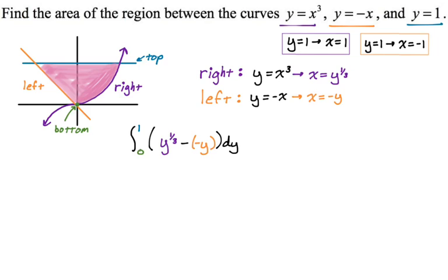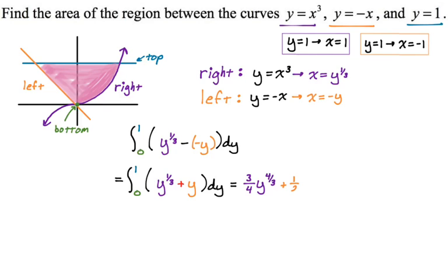Now I'll rewrite this and apply the reverse power rule. For y to the one-third, adding one to the exponent gives four-thirds, so the antiderivative is three-fourths y to the four-thirds. Integrating y gives one-half y squared. Evaluating from zero to one: when you plug in zero, everything zeros out. Plugging in one gives three-fourths plus one-half, which equals five-fourths. That's the area of the region.